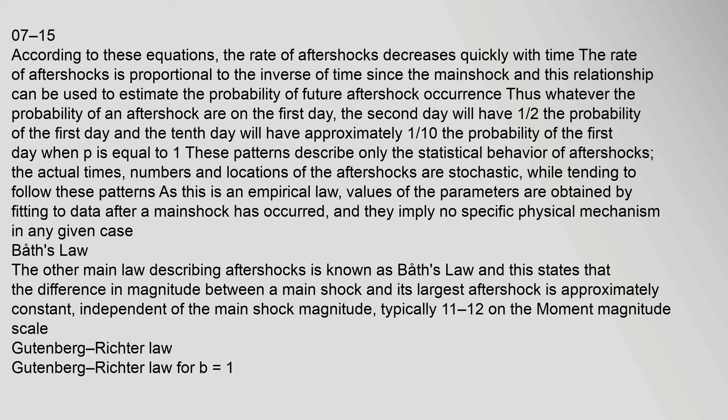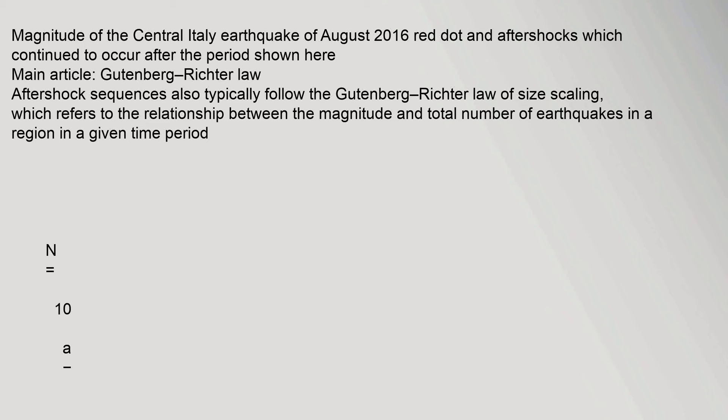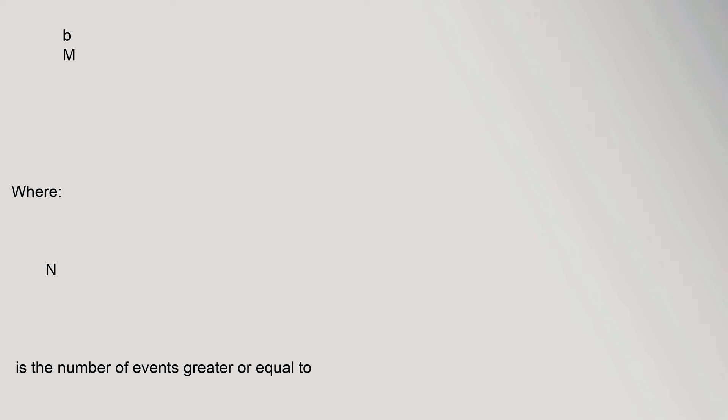Gutenberg-Richter Law: Aftershock sequences also typically follow the Gutenberg-Richter law of size scaling, which refers to the relationship between the magnitude and total number of earthquakes in a region in a given time period: N = 10^(A - B*M), where N is the number of events greater than or equal to M, M is magnitude, and A and B are constants.